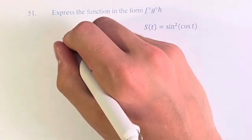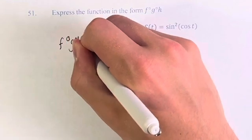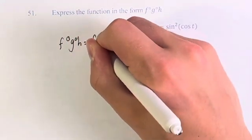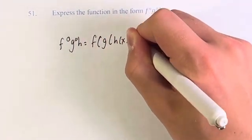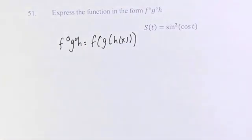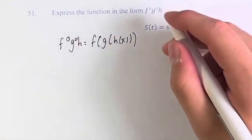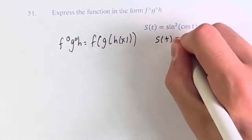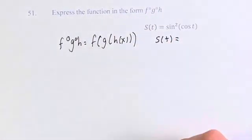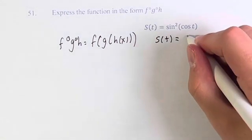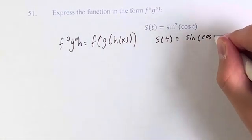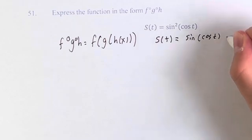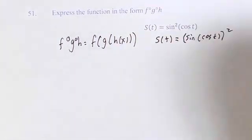We're looking for f of g of h of x as a triple composition. I'm going to write s of t a little bit differently to make it more clear what the composition might be. This is sine of cosine of t, all of this squared — that's what sine squared means.